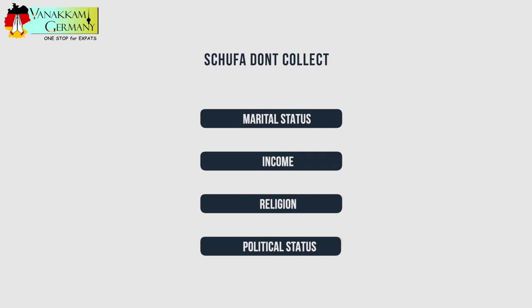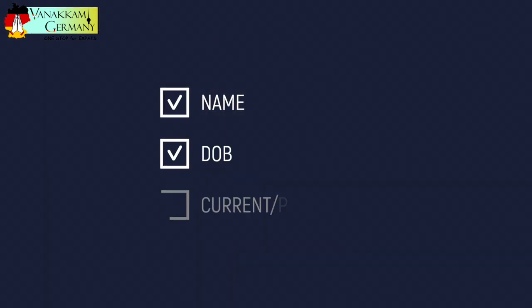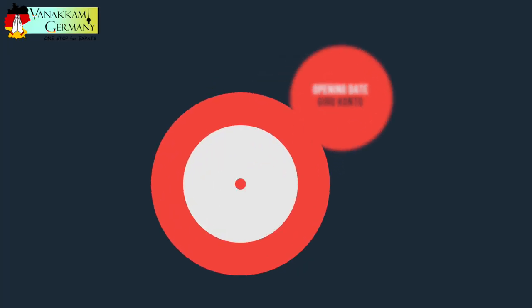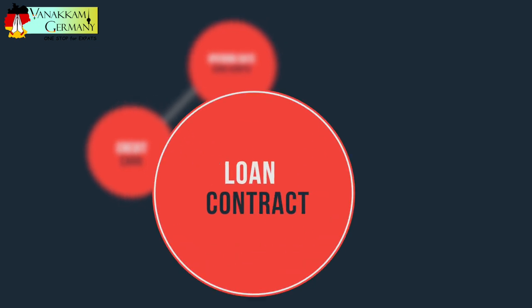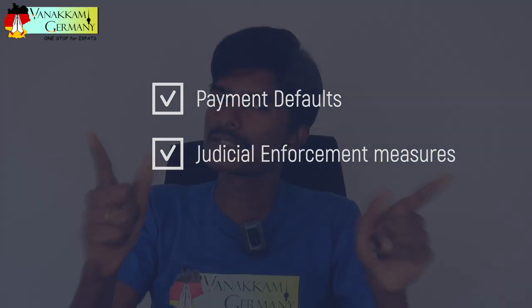What exactly does Schufa collect? Schufa doesn't know about your marital status, religion, income, or any kind of political affiliation. But it does collect your name, date of birth, and current and previous addresses. It also stores information reported by contractual partners, such as the opening date of your Girokonto, credit card, loan contracts, and leasing information. Schufa also stores negative features such as payment defaults or any judicial enforcement measures — if you have any payment default in the past, Schufa will have that data and make a big red mark.